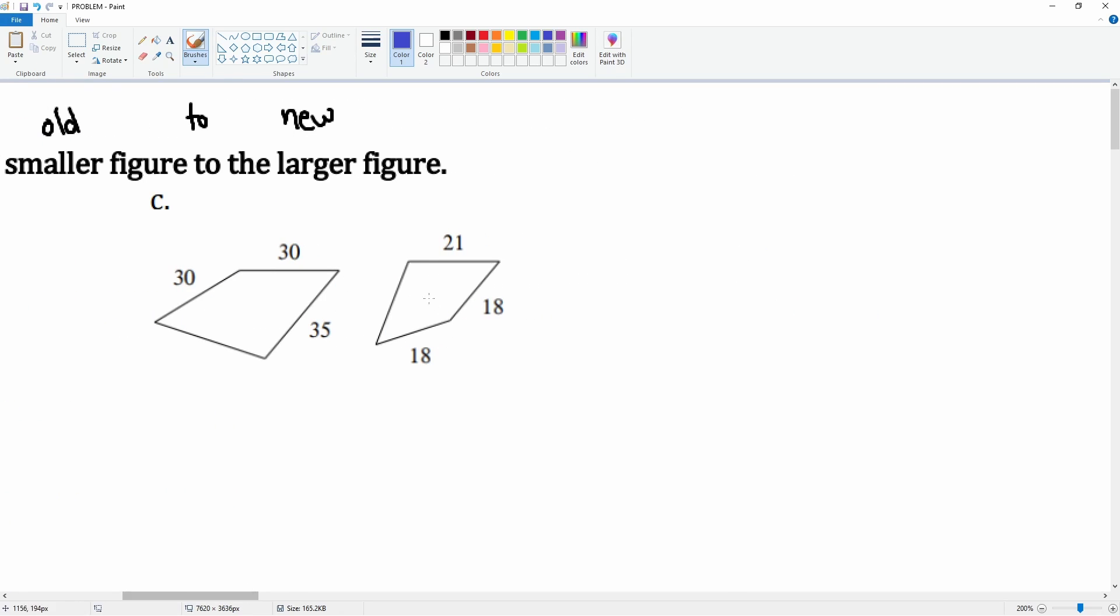Next, let's take a look here. This is the old and this is the new. Scale factor k is defined by new over old. We have 18 and 30, so k is 30 over 18 which can be simplified into